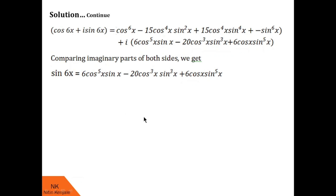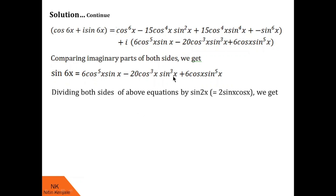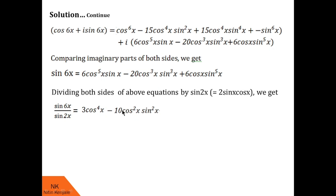I hope you understood this part. Next we find sin 6x / sin 2x by dividing both sides of this equation by sin 2x. On the right side we divide by 2 sin x cos x, using the identity sin 2x = 2 sin x cos x. After division, one cos and one sin cancel: we get 3cos⁴x from the first term, −10cos²x·sin²x from the second term (since 20/2 = 10), and continuing similarly.